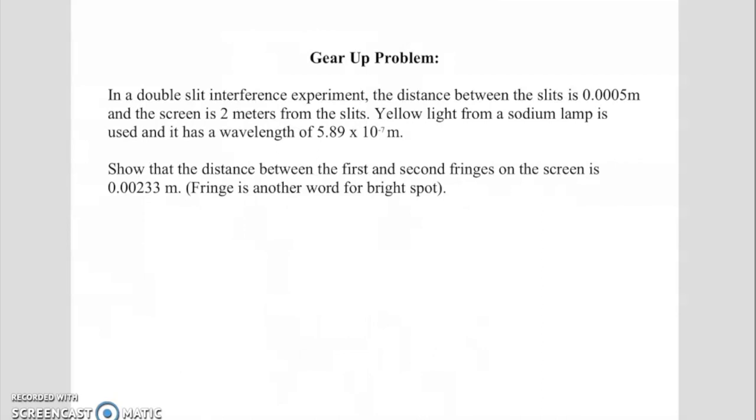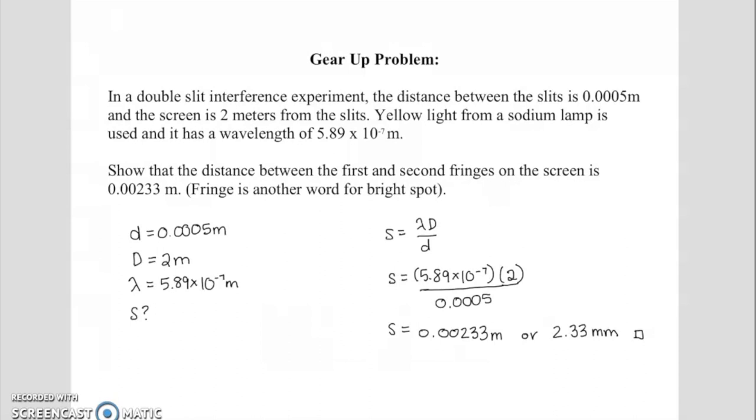And checking the gear-up problem using our equation and correctly using the variables to identify the givens, you should indeed be able to show that the distance between the first and the second fringes on the screen is about 0.002 meters.